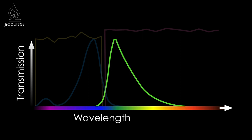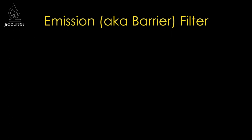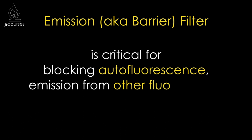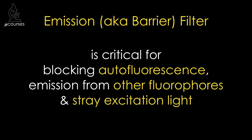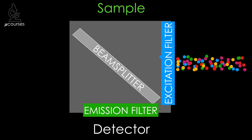Now let's consider the emission light. The dichroic mirror allows the majority of the emission light to pass through. In principle we could stop here, but it's best to add an emission filter. The emission filter should select for the emission wavelengths expected from the fluorophore. Emission filters play a critical role in blocking autofluorescence, emission from other fluorophores, and stray excitation light. The dichroic beam splitter isn't perfect and allows some excitation photons through; the emission filter blocks these stray photons, resulting in lower background and higher contrast images.